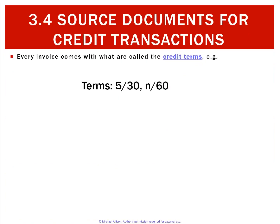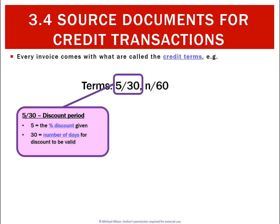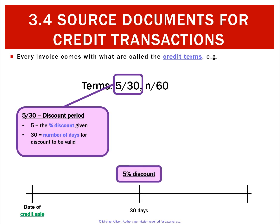We also see invoice terms. In this case we can see terms 5-30/60. The first part, 5-30: the first number refers to any discount the customer might be eligible for, and the second number — in this case 30 — represents the number of days in which the customer must pay for the discount to be valid. So if a sale was made on day zero, the customer has 30 days to pay and will receive a 5% discount.